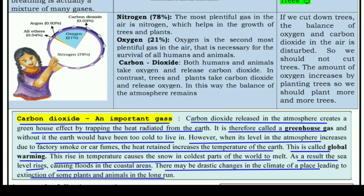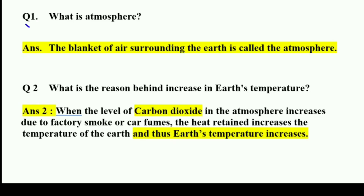Now let's move to the question-answer section. Question 1: What is atmosphere? The blanket of air surrounding the earth is called the atmosphere. Question 2: What is the reason behind the increase in earth's temperature? When the level of carbon dioxide increases due to factory smoke and car fumes, the heat retained increases the temperature of the earth — this is global warming.